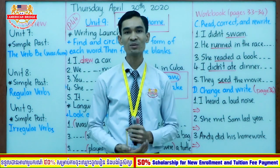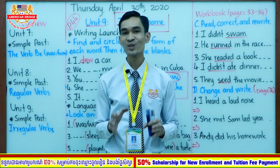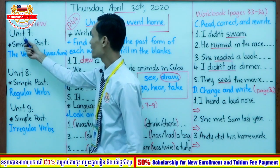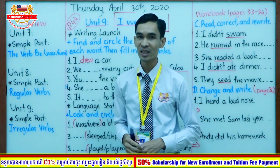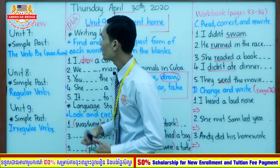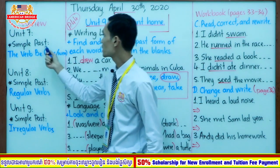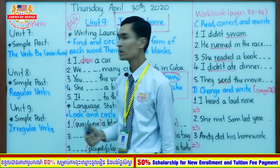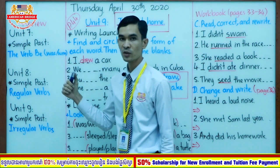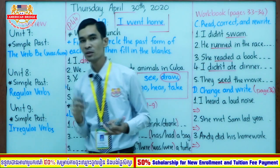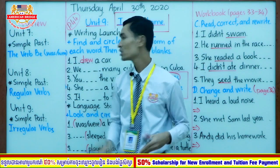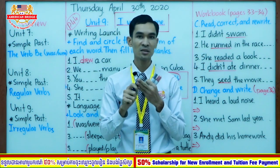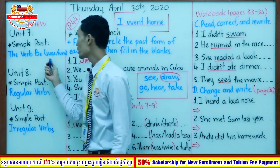Before continuing our lesson, I would like to review some grammar — not a simple review, because we review from level 3A: unit 7, unit 8, and unit 9. You just started in level 3B, right? So what did you study in unit 7? In unit 7 you studied simple past — the verb 'be.' We have 'was' and 'were.' What kind of subject uses 'was'? I, he, she, it — use 'was.' What kind of subject uses 'were'? You, we, and they use 'were.'